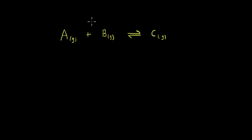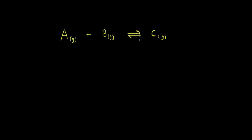We have this reaction where A and B react to form C, and all of these are gases. We want to know that at this point, when they are in equilibrium, what if we introduce a few moles of inert gas? What will happen to the equilibrium? Will it shift towards the reactants or the products, or will it stay the same?